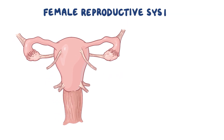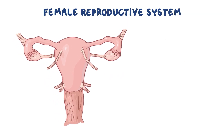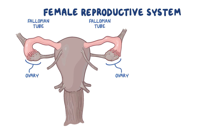The female reproductive system includes all of the internal and external organs that help with reproduction. The internal sex organs are the ovaries, which are the female gonads, the fallopian tubes — two muscular tubes that connect the ovaries to the uterus — and the uterus.